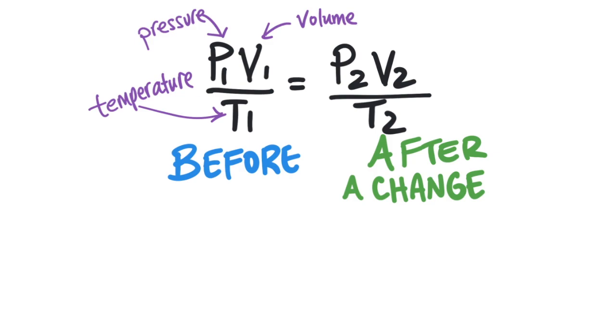This equation has six variables, and for chemistry homework, you are usually going to be given five of the variables and then you'll solve for the sixth unknown variable.